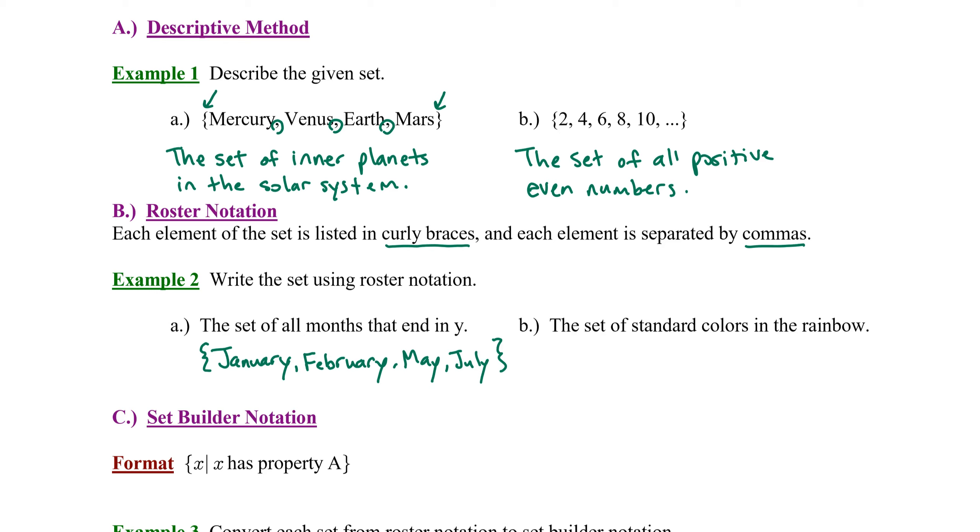Again, the curly braces are essential and each element is separated by commas. Let's try another example. B, the set of standard colors in the rainbow. Well, let's open up our curly braces to begin our set. The standard colors are red, orange, yellow, green, blue, indigo, and violet. So, again, the set is listed in curly braces. It's going to take a little practice to get your hand to write those correctly. And each element is separated by commas.